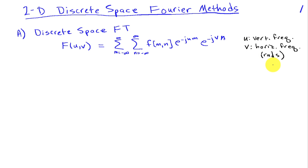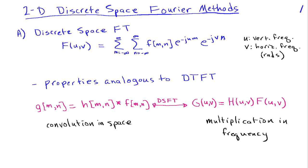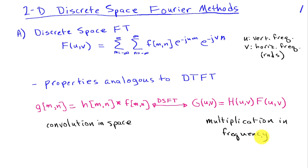Both of these have units of radians. The properties of the discrete space Fourier transform are very analogous to those of the discrete time Fourier transform. Perhaps one of the most important ones is the convolution property, because convolution is one way to implement a linear shift invariant system applied to an image. So if we have a convolution in space — g of m, n equals h of m, n convolved with f of m, n — the discrete space Fourier transform of that is just the product of the discrete space Fourier transforms of h and f. So convolution in the space domain corresponds to multiplication in the two-dimensional frequency domain.